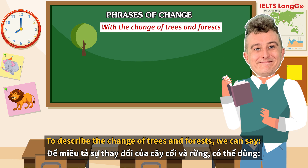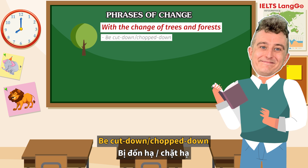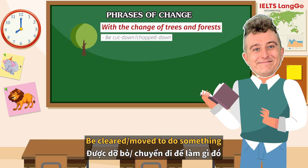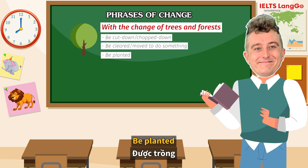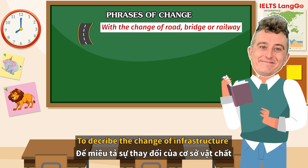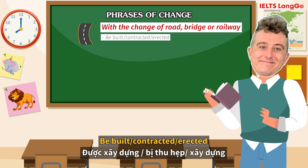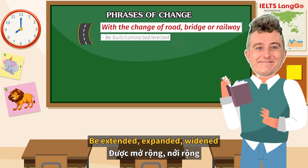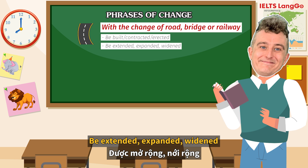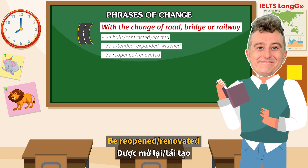To describe changes to trees and forests, we can say: to be cut down or chopped down; to be cleared or moved in order to do something; or to be planted. To describe changes to infrastructure — which are very similar to buildings — we can say: built, contracted, or erected; to be extended, expanded, or widened; or to be reopened or renovated.